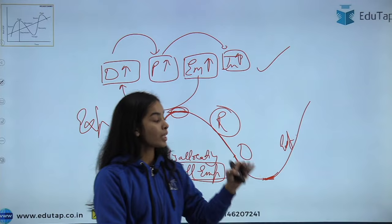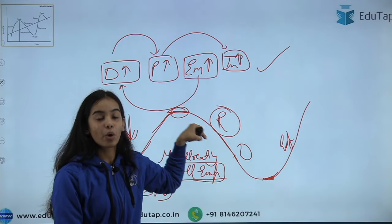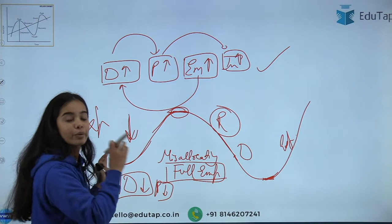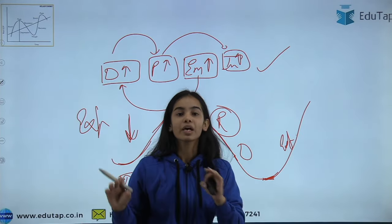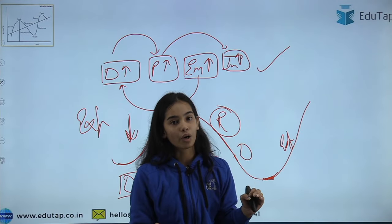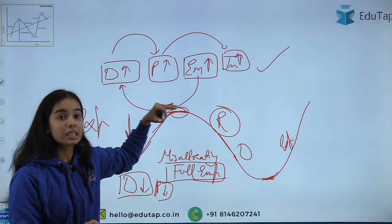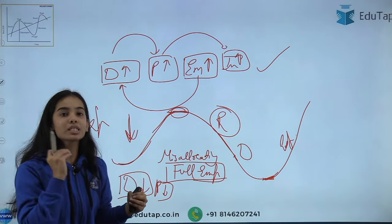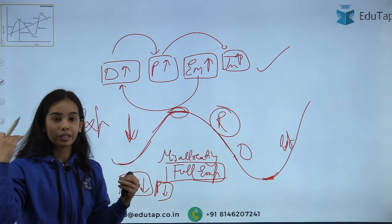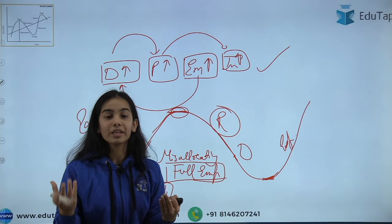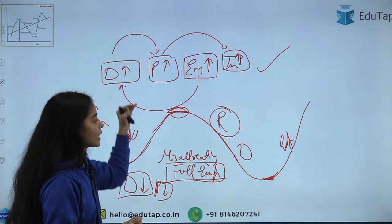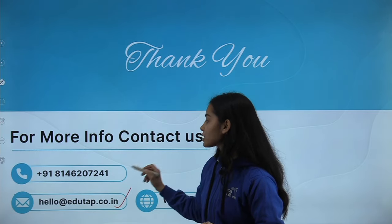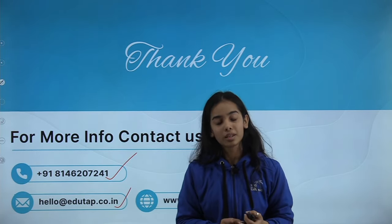In the expansion phase, variables have a positive outlook and there is an optimistic wave in the country. When recession, depression, and contraction are happening, all variables go down because there is a pessimistic wave. And as we discussed, when we reach the peak, there is full employment and demand is too high, but producers cannot cater to that demand because resources are not infinite — so the curve goes down. Thank you so much; if you have any query you can mail us or contact us through the number provided.